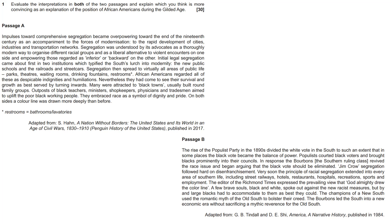Passage A: Impulses toward comprehensive segregation became overpowering toward the end of the 19th century as an accompaniment to the forces of modernisation — the rapid development of cities, industries, and transportation networks. Segregation was understood by its advocates as a thoroughly modern way to organise different racial groups and as a liberal alternative to violent encounters on one side and empowering those regarded as inferior or backward on the other. Initial legal segregation came first in two institutions typifying the South's lurch into modernity: the new public schools and the railroads and streetcars. Segregation then spread to virtually all areas of public life — parks, theatres, waiting rooms, drinking fountains, and restrooms. African-Americans regarded all of these as despicable indignities and humiliations.